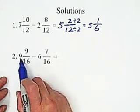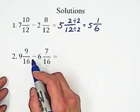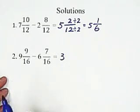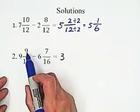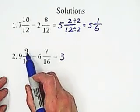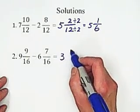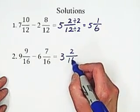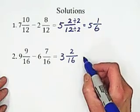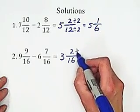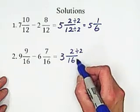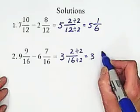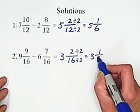Second: 9 minus 6 subtracted gives us 3. Because of the same denominator, subtract 7 from 9, which is 2. Keep denominator unchanged: 16. Simplify by dividing 2 into the top and bottom. Equals 3 and 1 over 8.